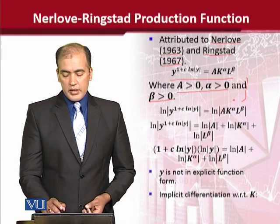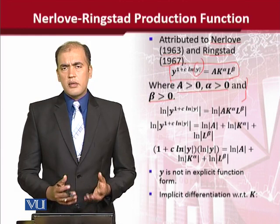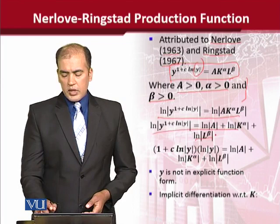When we see this function, we see that the dependent variable is in the exponent, and we need to bring it down to the base. So that we could get the value of it or interpret it. Therefore, what we did is we took the natural log on both sides. After calculating the natural log, we applied the laws of logarithm to simplify it.